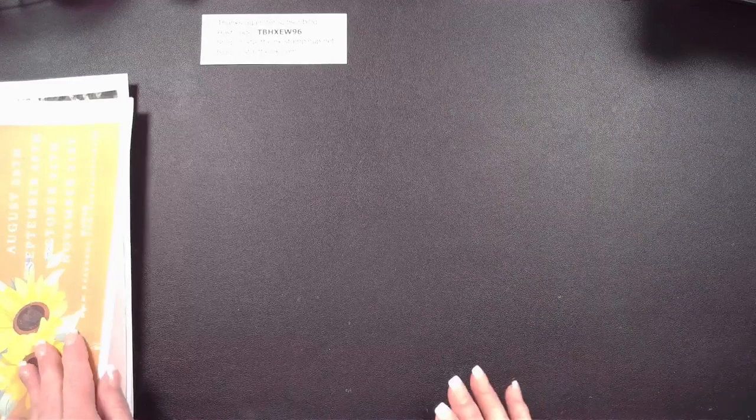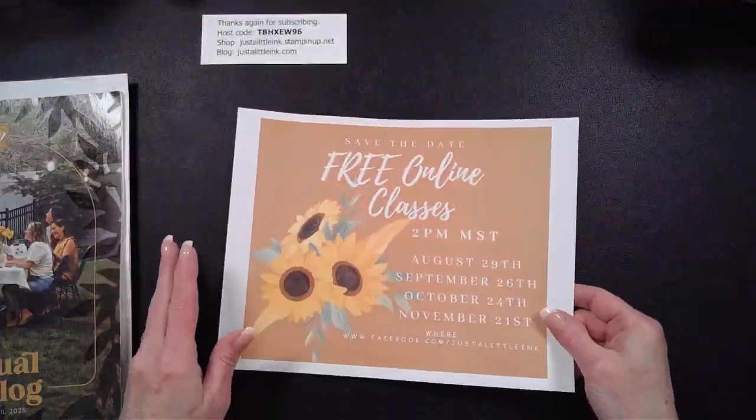Why hello, it is Amy Taylor. I'm an independent demonstrator with Stampin' Up now for my 22nd year. I'm doing my best to be better with my lives, so I am on Thursday at two o'clock. The goal is to be every week at two o'clock. Next week will be a recorded video that I will share because I will not be around. I'm going to flip my camera over so you can see the things I'm going to share. Before I get going on my project, I want to share just a couple things.